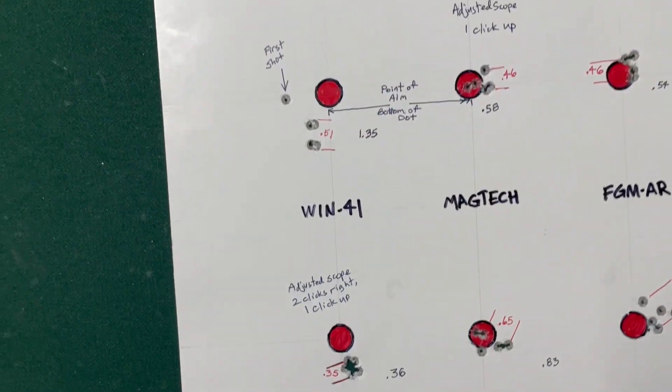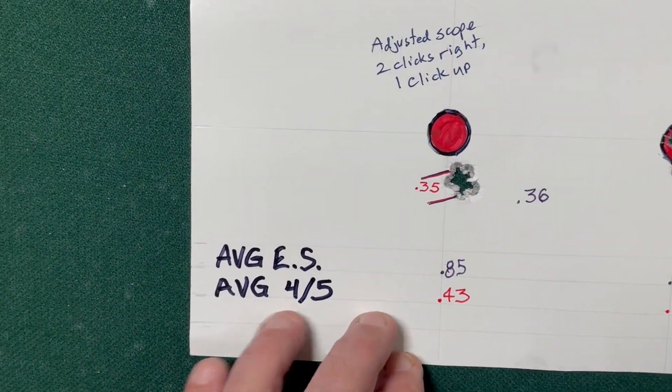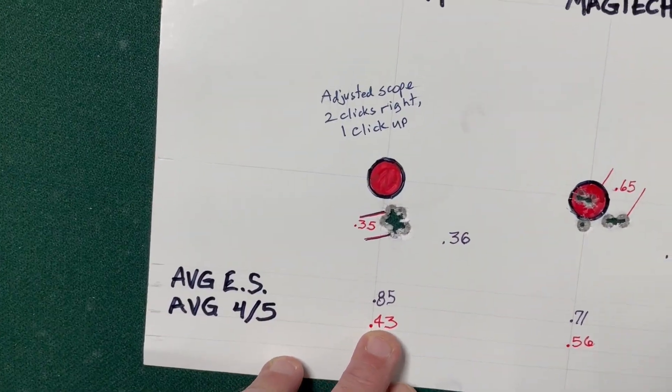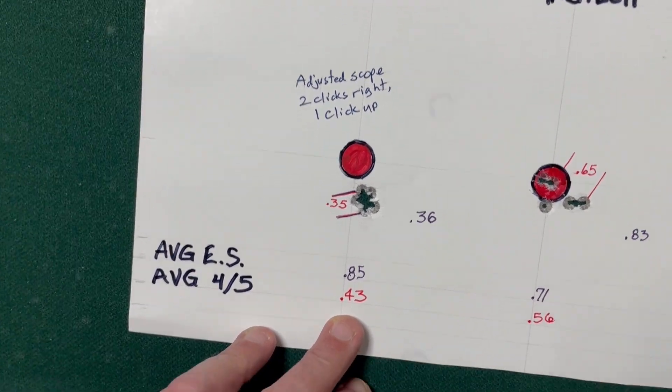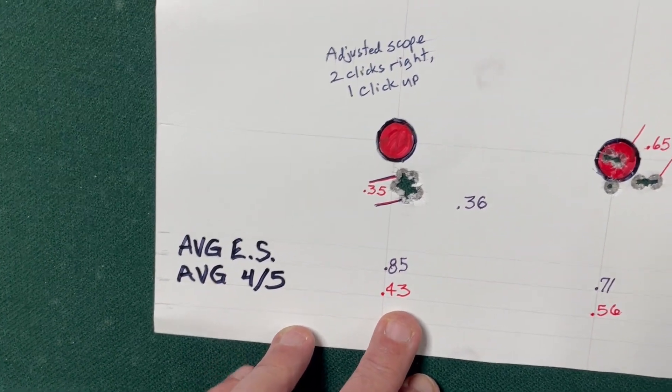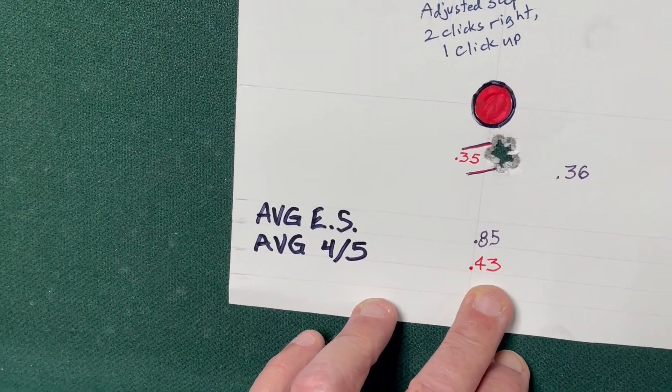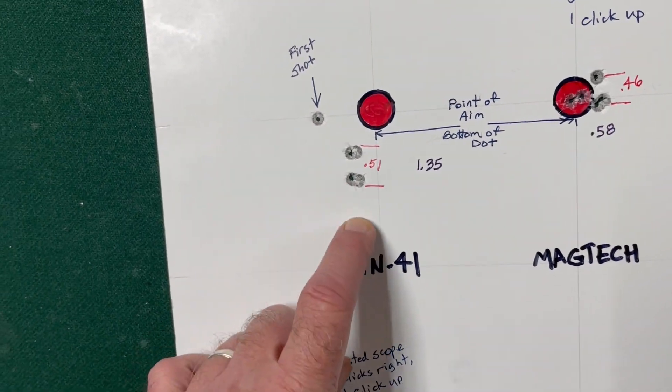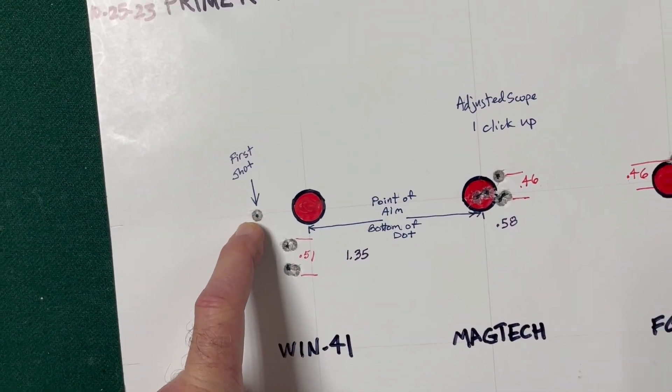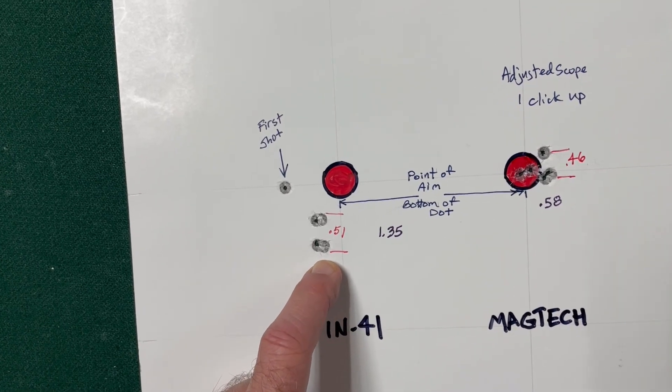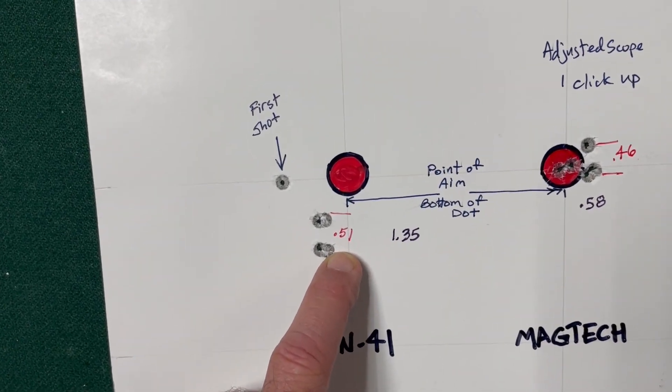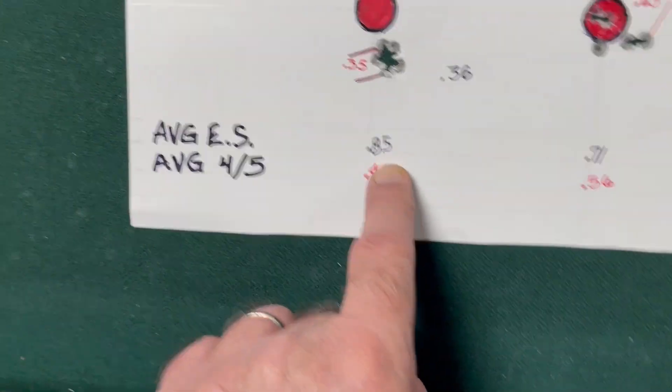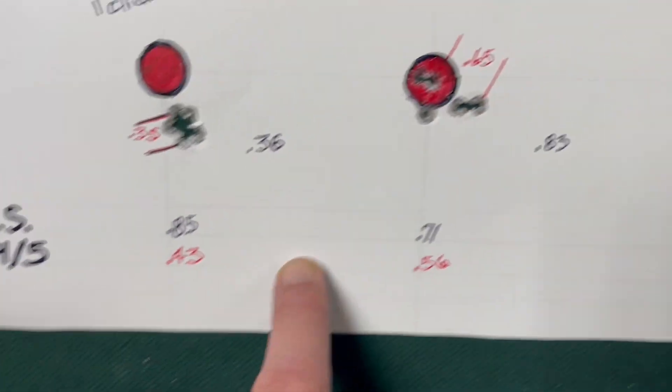Let's look how they averaged out, since I was shooting two groups of each charge. I went back and averaged the numbers. On the Winchester 41, the average extreme spread was .85 and the best four out of five averaged .43. That was my best of the day as far as that best four out of five. The cold barrel shot here threw that number off. This is what I would really count on, because that cold barrel shot, you know it's going to be off. But then the next four out of five grouped really well together at .51 inches, which without that cold barrel shot would bring that number way down into the fours.